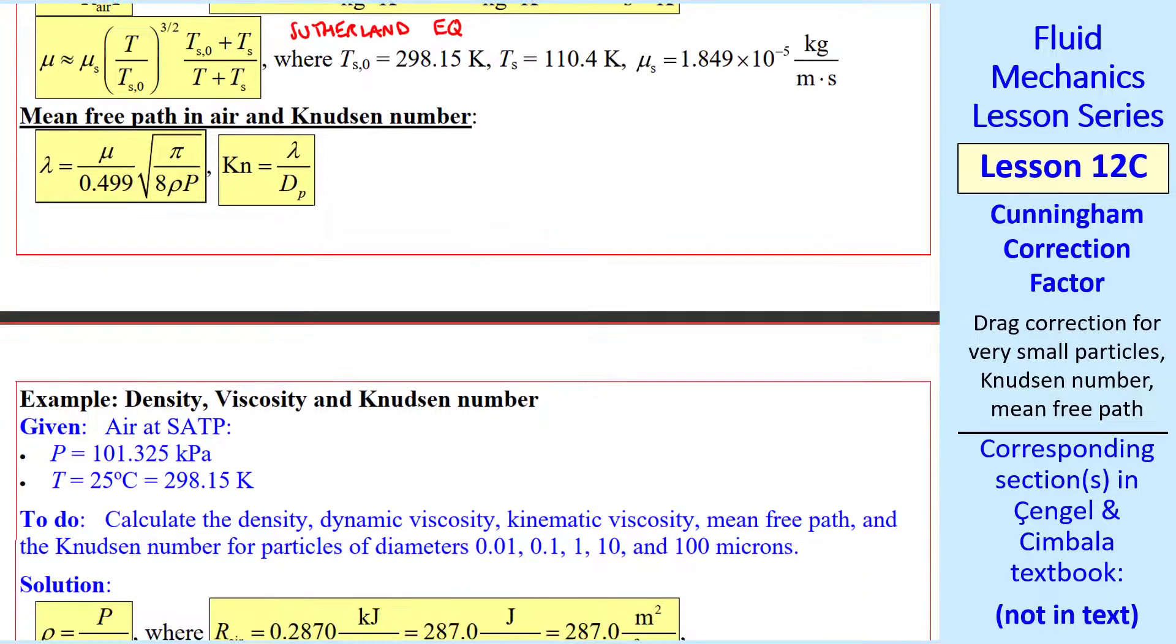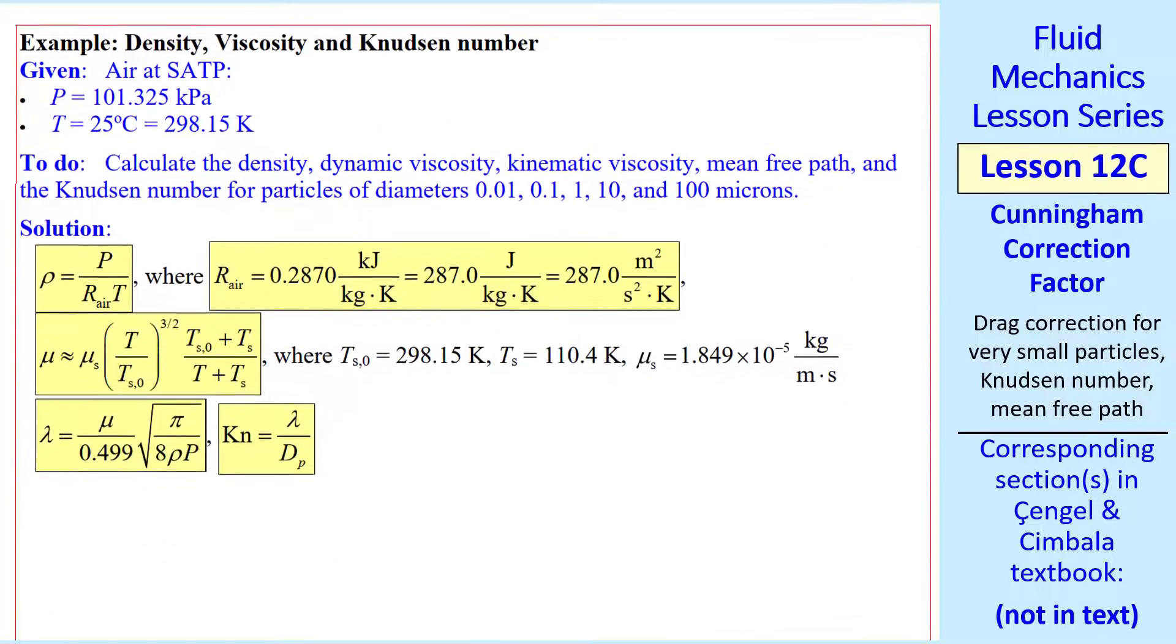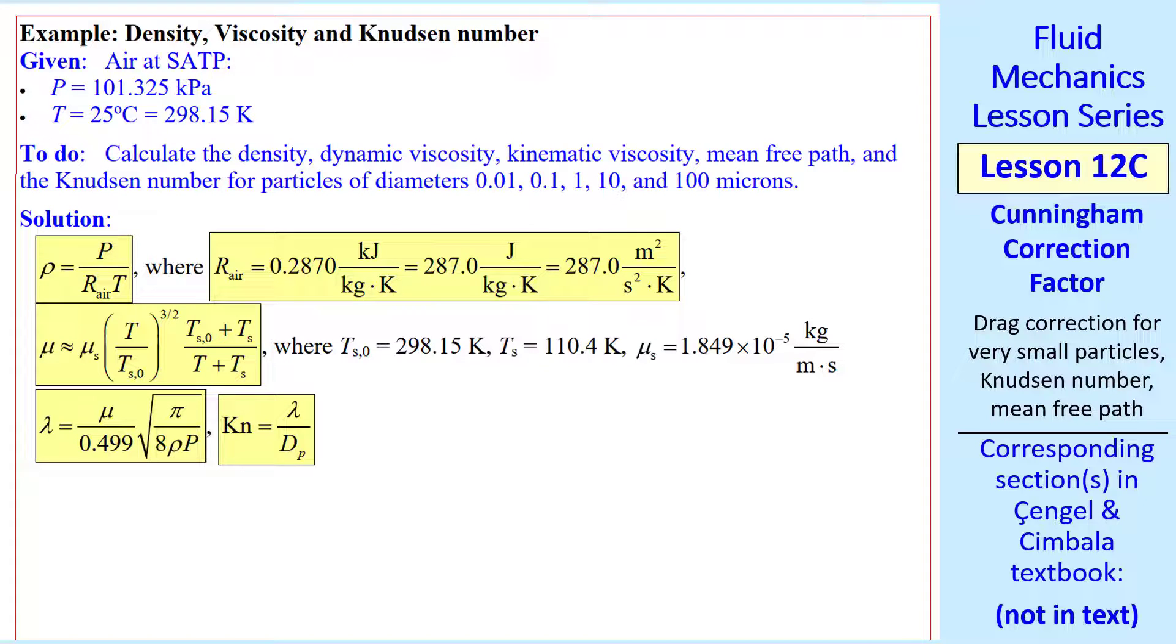I'll do a quick example, where we calculate the density, viscosity, and Knudsen number for air at SATP, which means standard ambient temperature and pressure. The pressure is standard atmospheric pressure, and the temperature is 25 degrees C.